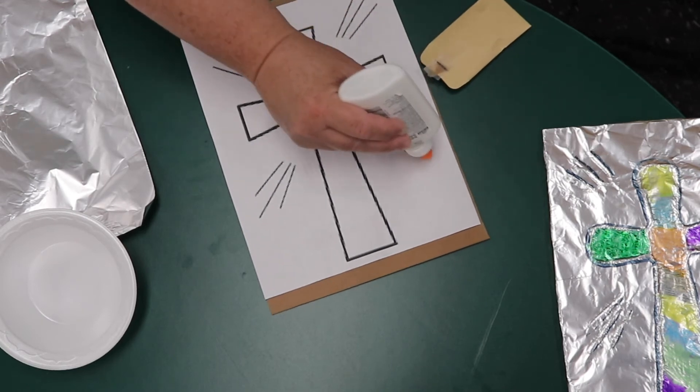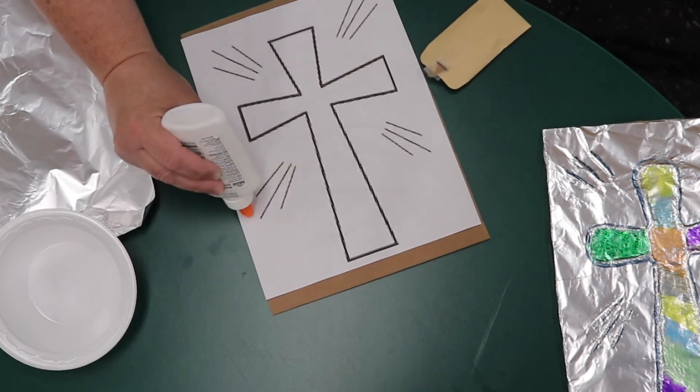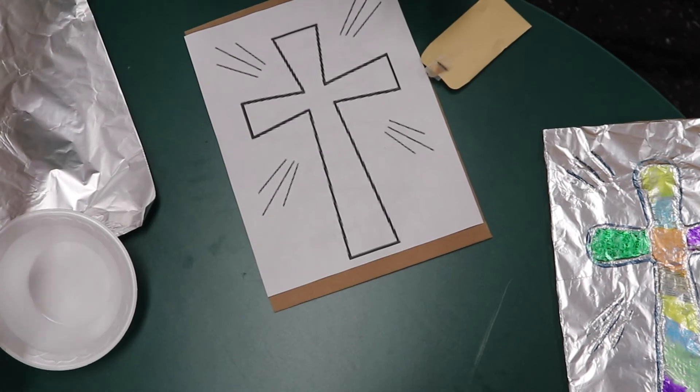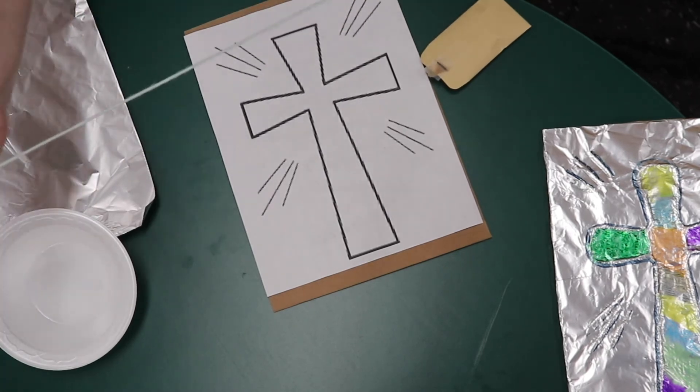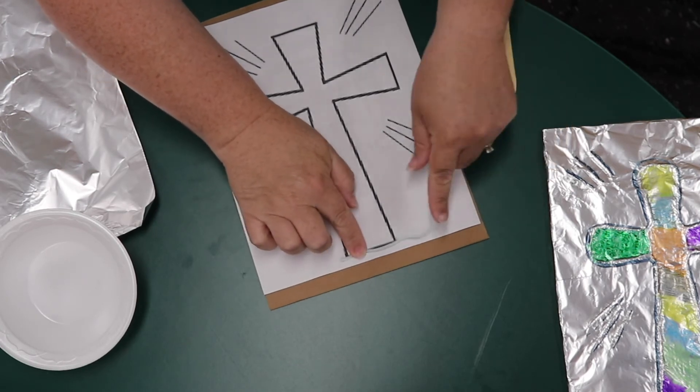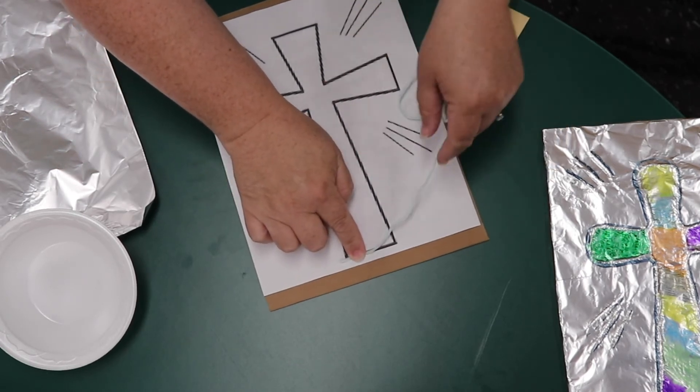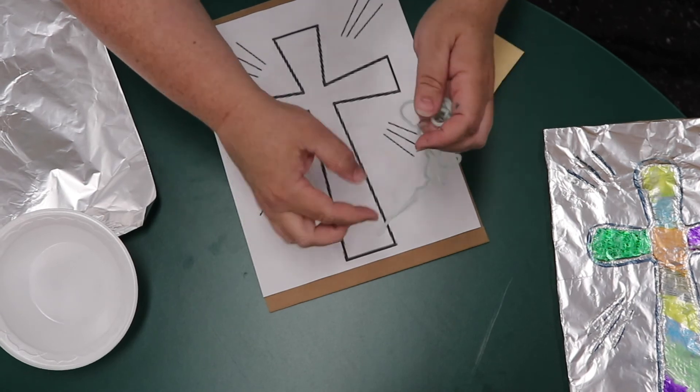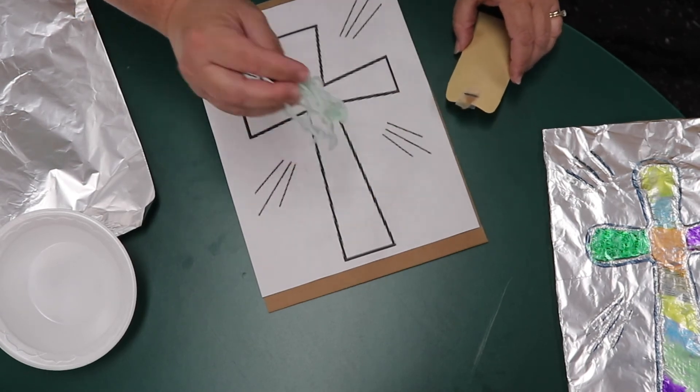Then you're going to take your string and glue your string around the outline of the cross and on your little lines here. And when you've got your string glued on...